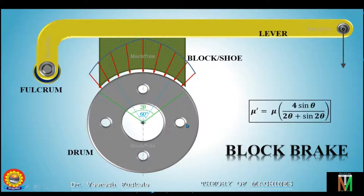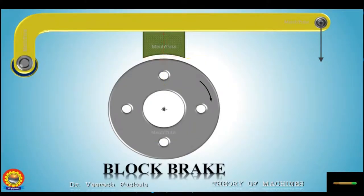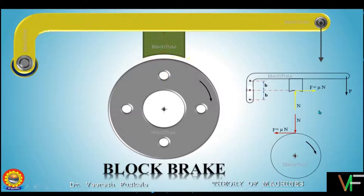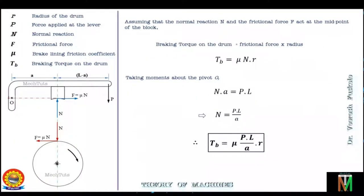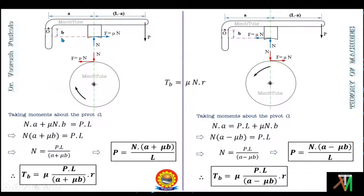We then discussed the forces acting on both the drum and the lever-block assembly, and learned to draw the free body diagram of the drum and lever-block assembly. In that analysis we discussed two configurations of the single block brake: first when the fulcrum point passes through the line of action of the friction force, giving the braking torque equation, and second when the fulcrum point is above the line of action of the friction force by distance b. We discussed both clockwise and anticlockwise rotation cases.